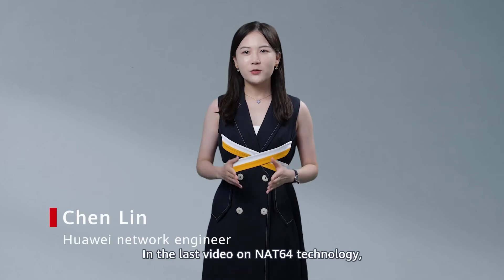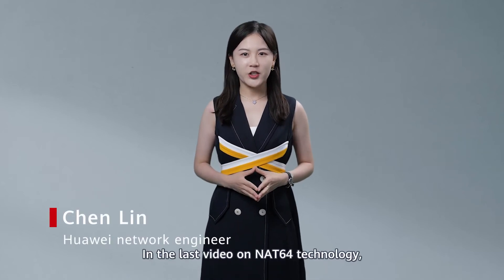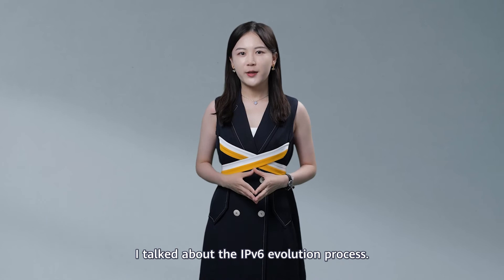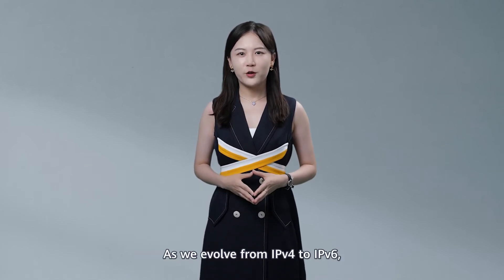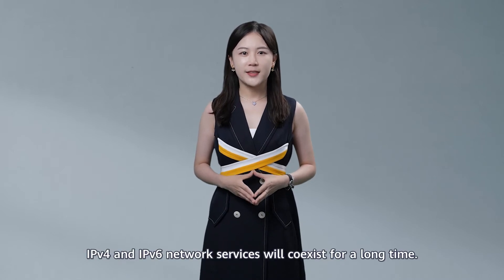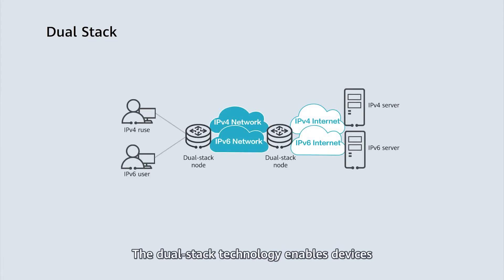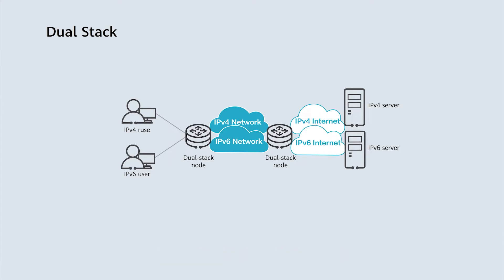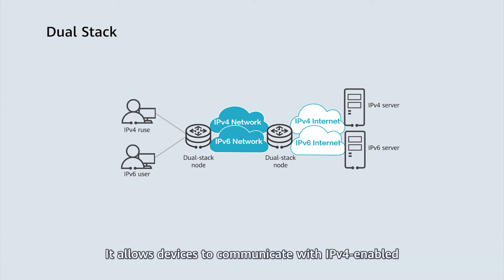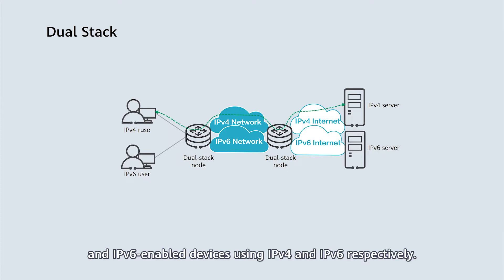Hello everyone! In the last video on NAT64 technology, I talked about the IPv6 evolution process. As we evolve from IPv4 to IPv6, IPv4 and IPv6 network services will coexist for a long time. The dual stack technology enables devices to run both IPv4 and IPv6 services, allowing devices to communicate with IPv4-enabled and IPv6-enabled devices using IPv4 and IPv6 respectively.